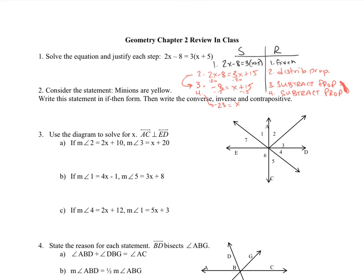For number 2, it says consider the statement 'minions are yellow.' We need to write this in if-then form. So we're going to say: if you are a minion, then you are yellow. Now, this part is P and this part is Q. Remember, for the converse, the inverse, and the contrapositive, we are just manipulating the P and the Q.